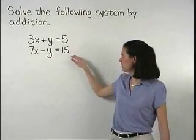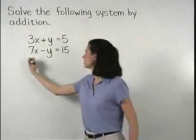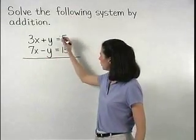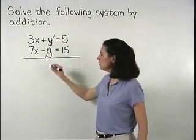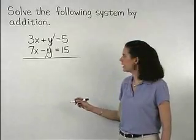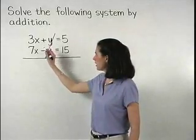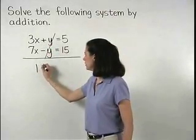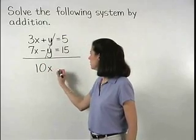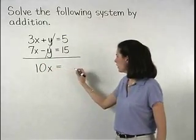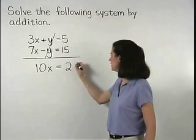Notice that if we add these two equations together, our plus y and minus y will cancel out and on the left side 3x plus 7x is 10x and on the right side 5 plus 15 is 20.